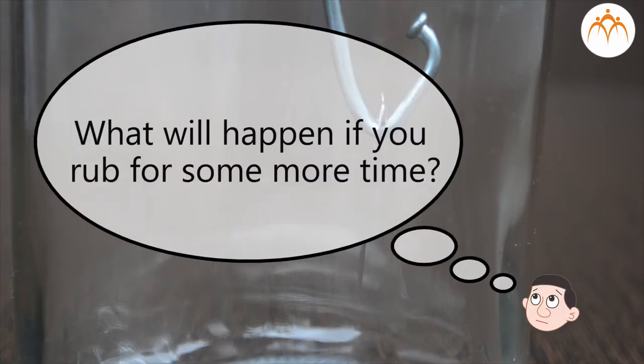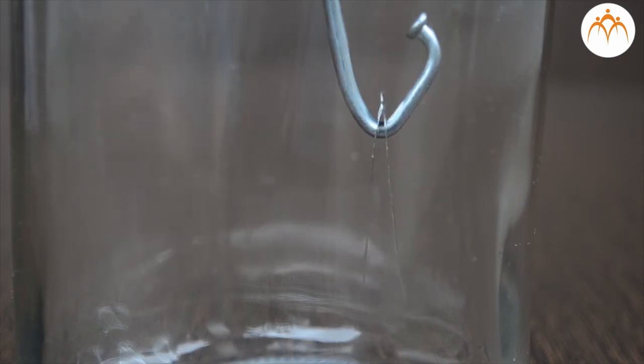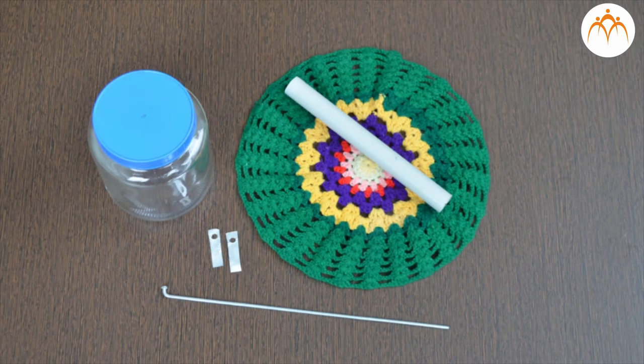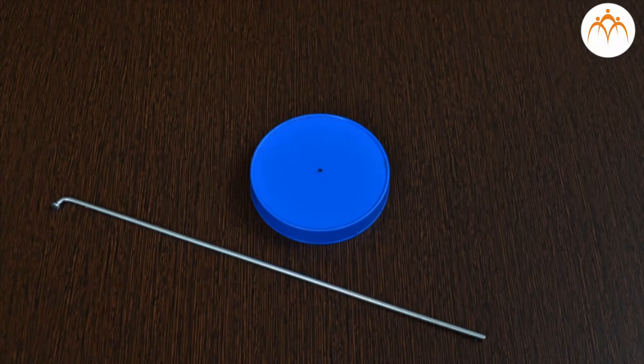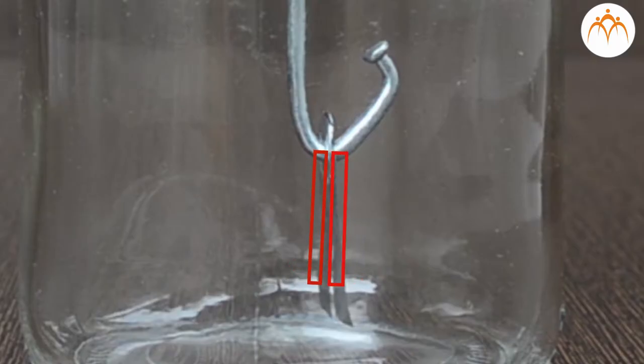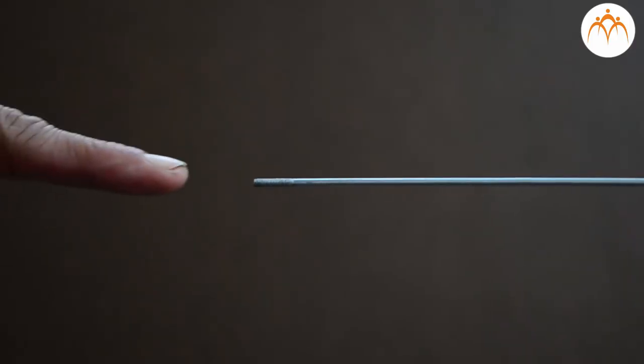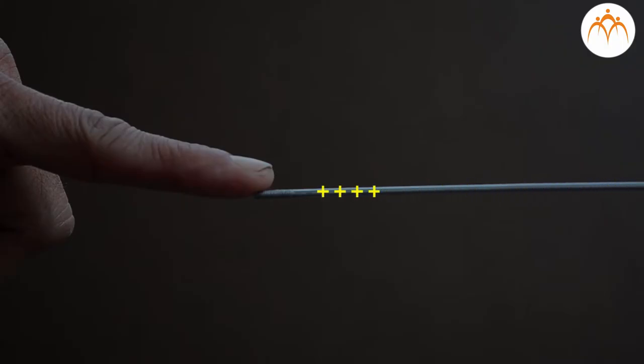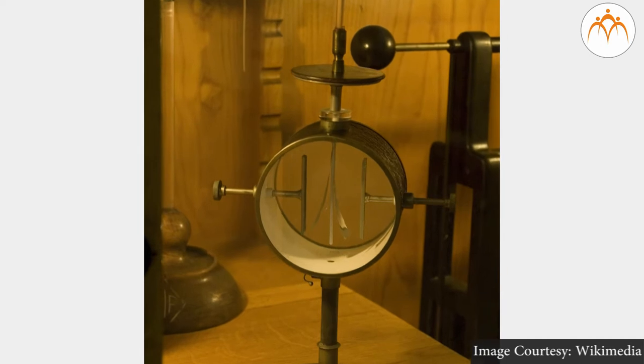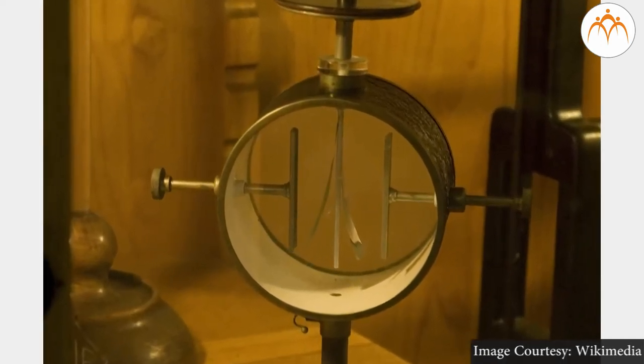What will happen if you rub for some more time? Will it result in more repulsion? If we rub it for more time, more charges will be present on the PVC pipe and the distance between two aluminum strips increases. If we touch the electroscope with our hands, thin aluminum strips will collapse as our body carries the charges out of the electroscope into the earth. There are no charges on the strip now. In laboratory, electroscopes are much more sophisticated devices. They are made up of big glass containers and have gold leaf instead of aluminum strips.